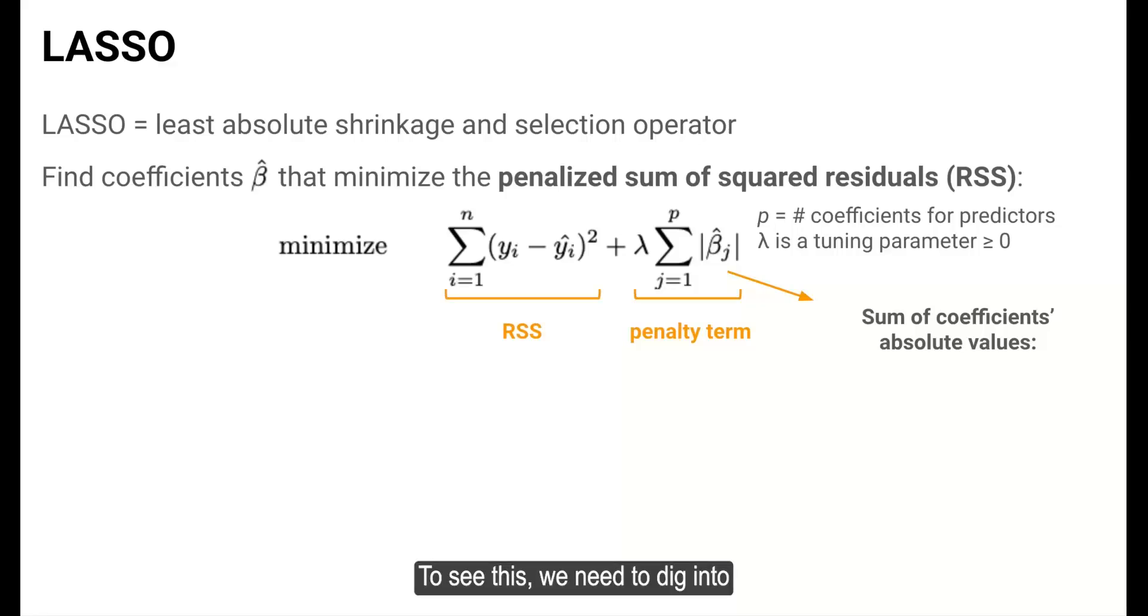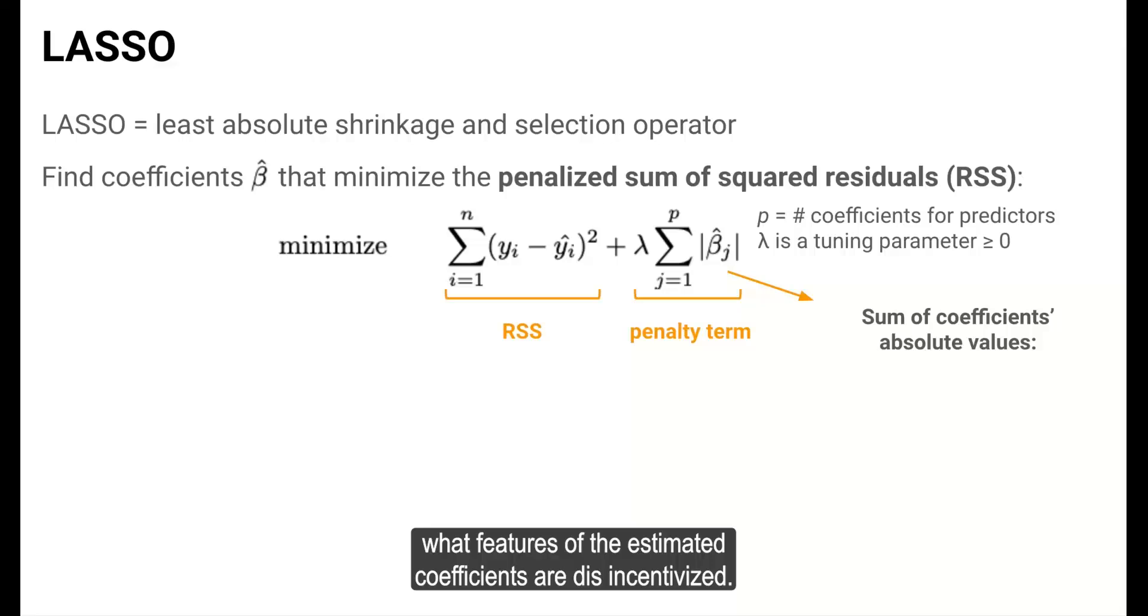To see this, we need to dig into the mathematical mechanics behind the penalty. We want this penalty term to be small so that this entire penalized sum of squared residuals is minimized. So let's ask, when is the penalty term large, in order to determine what features of the estimated coefficients are disincentivized.